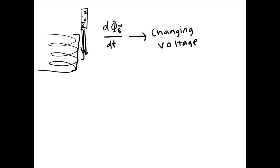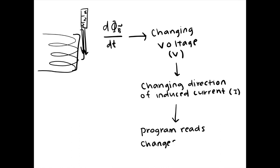As each tiny magnet moves through the reader, the magnetic flux changes, changing the voltage and the direction of the induced current. A program in the card reader processes the changes in current and translates it into readable information. This then allows or denies the transaction.